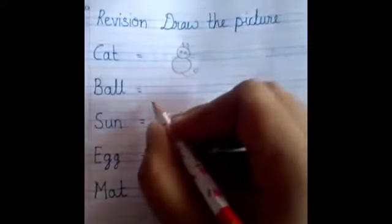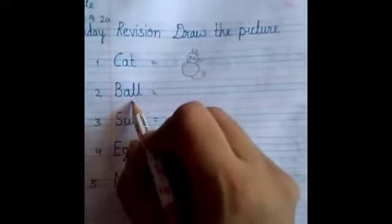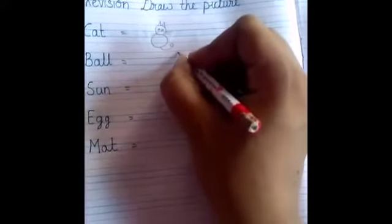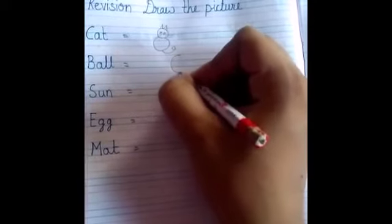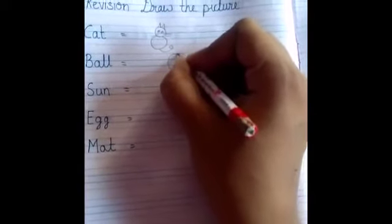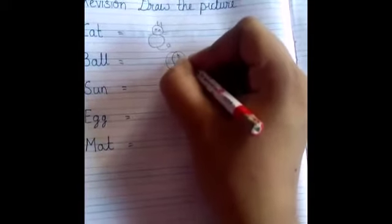Like this, you will make a cat. Now, the second picture is a ball. So, we will draw a big circle like this. So, this is ball.